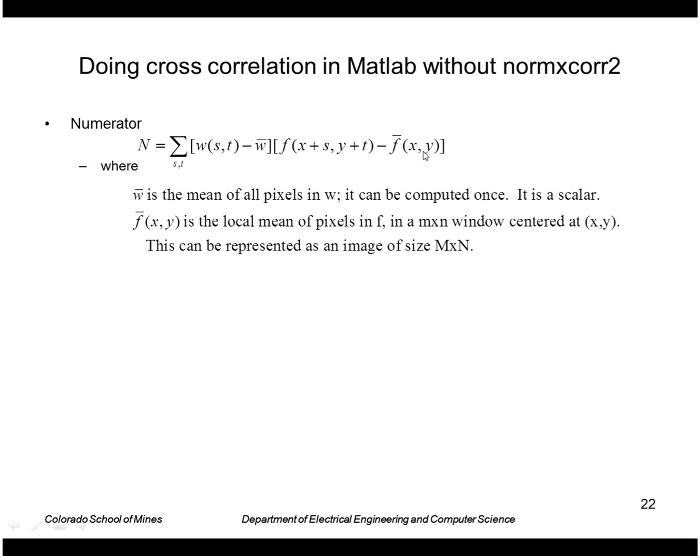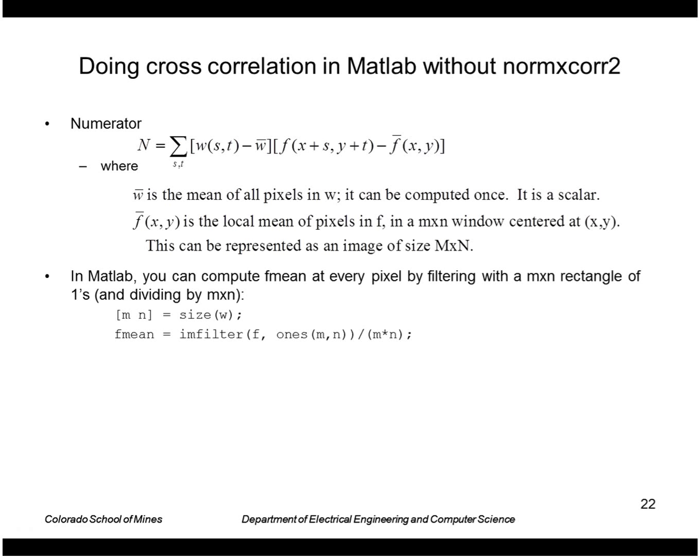So to generate the numerator, what we're going to need to do is, well, the mean of w is easy, right, because w is the same everywhere. But the mean of f, recall, is the local mean centered at x,y. So we can compute the local means by filtering f with a box filter of the size of w, and then of course dividing by the number of pixels in w. So that gives me an image of means of f.